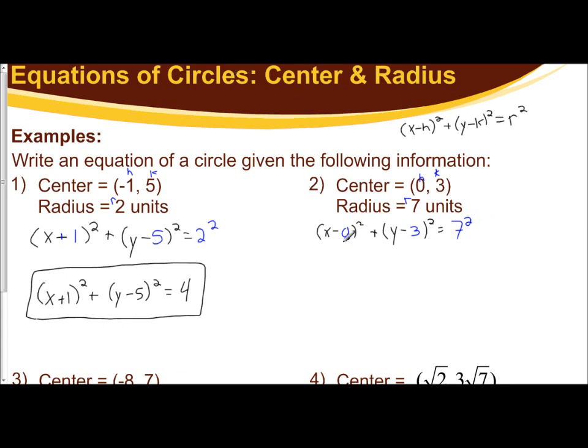When you're subtracting 0, you don't ever write minus 0. So it doesn't change the value, you're just left with x squared. Plus, you get y minus 3 squared, equals 7 squared is 49. And there is the equation of the circle, represented by a center of 0, 3, and a radius of 7.